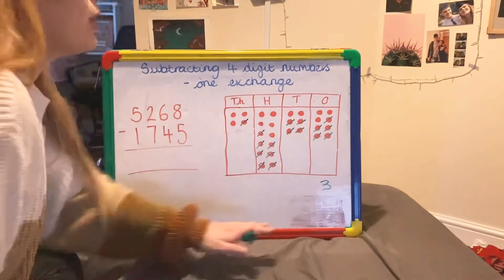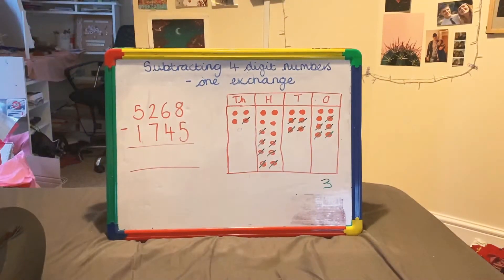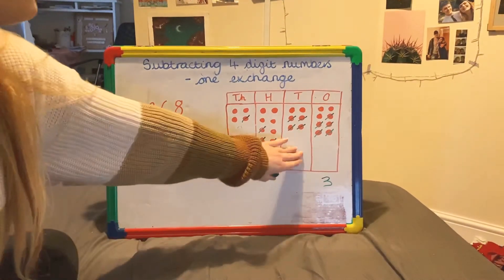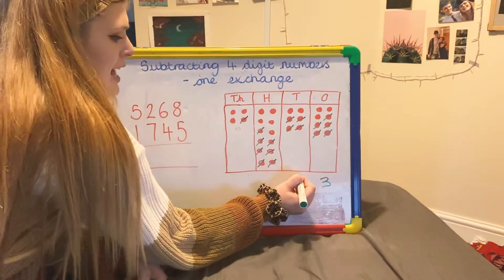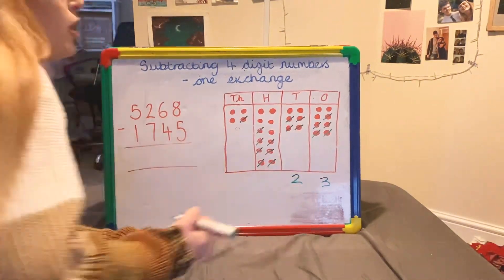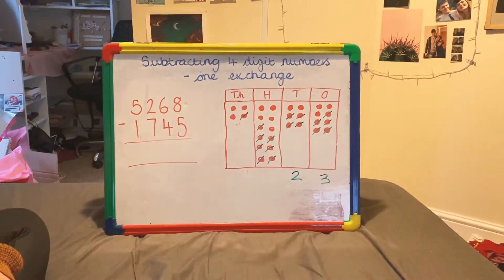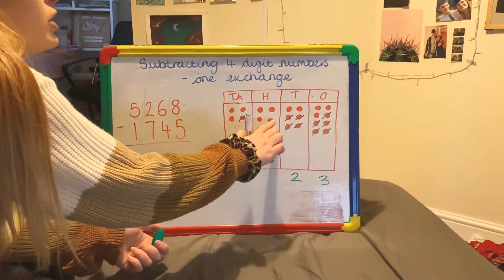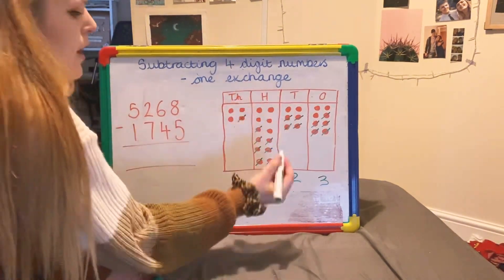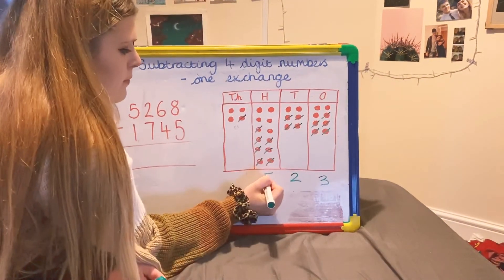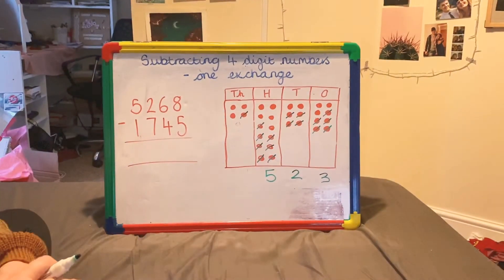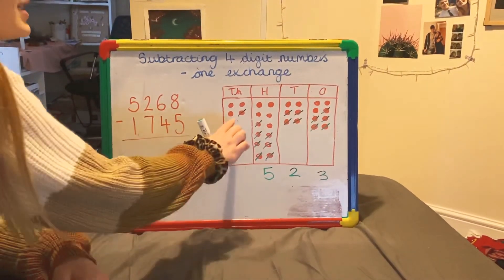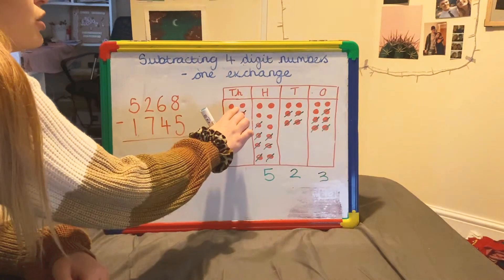Remember we always start from the thousands column when reading the answer. Looking at the tens column, I have 2 counters left with no cross through them. How many do I have in my hundreds? 1, 2, 3, 4, 5. And finally my thousands column — how many do I have left? 1, 2, 3.